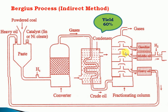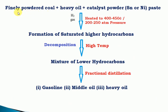The crude oil passes through a fractional distillation column, where different hydrocarbons are separated based on their boiling points. This is the basic principle of the Bergius process. In the flow chart: finely powdered coal with heavy oil and catalyst (tin and nickel oleate) is passed with hydrogen gas, heated to 400 to 450 degrees centigrade at 200 to 250 atmospheric pressure. Saturated hydrocarbons form, then decompose at higher temperatures into lower hydrocarbons, which condense into crude oil. Fractional distillation separates the main products: gasoline, middle oil, and heavy oil. This process is called hydrogenation of coal, synthetic petrol, or the Bergius process.